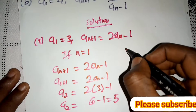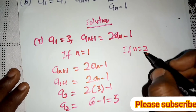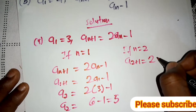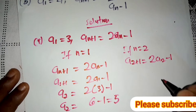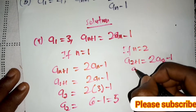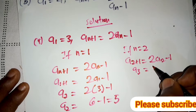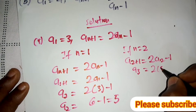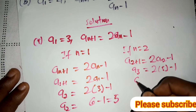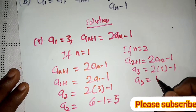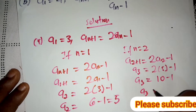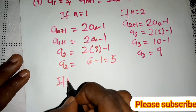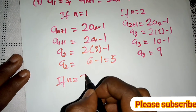If n = 2, then a2+1 = 2*a2 - 1, so a3 = 2*a2 - 1. Since a2 = 5, we have a3 = 2(5) - 1 = 10 - 1 = 9. So a3 = 9.